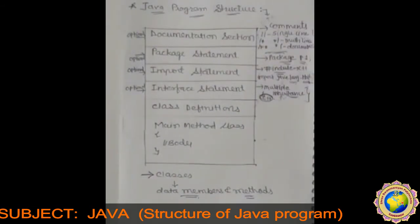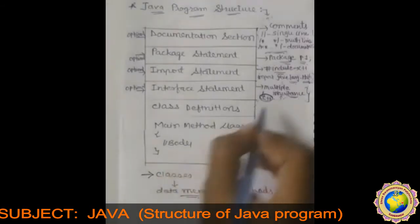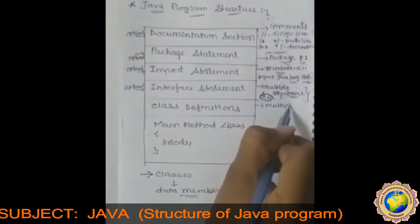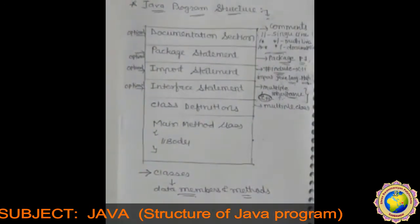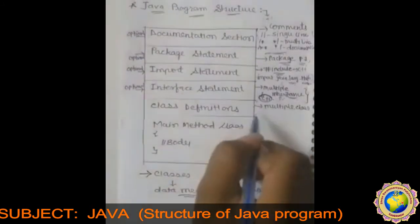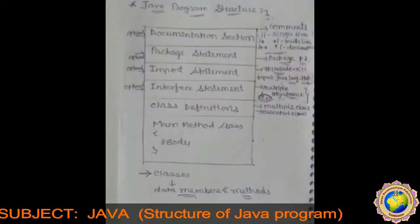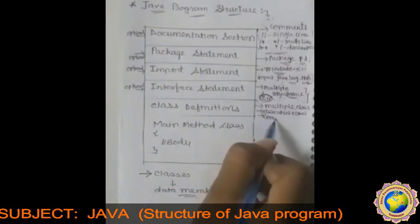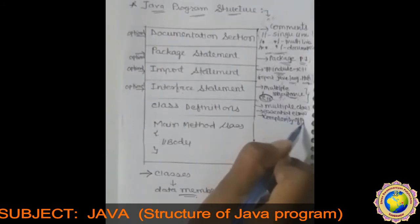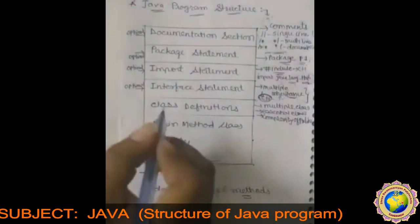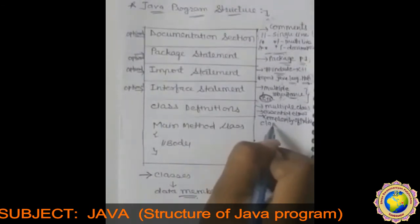Next is the class definition. A Java program may contain multiple class definitions; you can have multiple classes in a single program. Classes are the primary and essential element of a Java program. These classes are used to map objects of real-world problems, and the number of classes used depends on the complexity of the problem. The syntax is: class [class name].